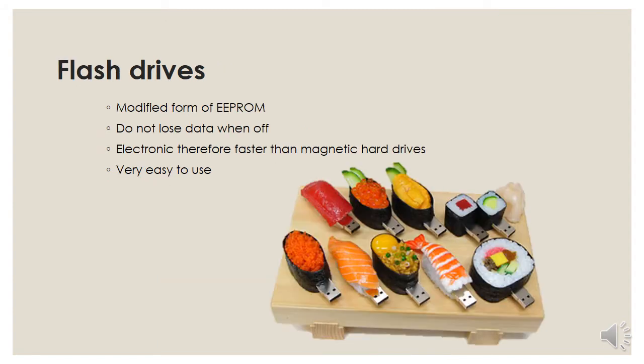Flash drives are the third form. They are actually a modified form of EEPROM — electrically erasable programmable read-only memory — so they don't lose their data when the power goes off. The technology used for flash drives is electronic, and because it's electronic they are much faster than magnetic hard drives. No read-write head needs to move to find the location; it can happen instantaneously. Flash drives are also very easy to use, which is a big advantage.